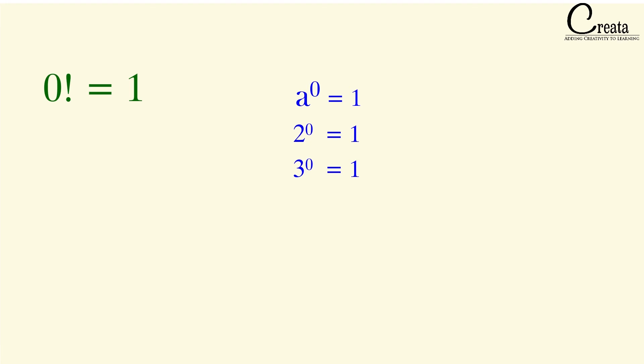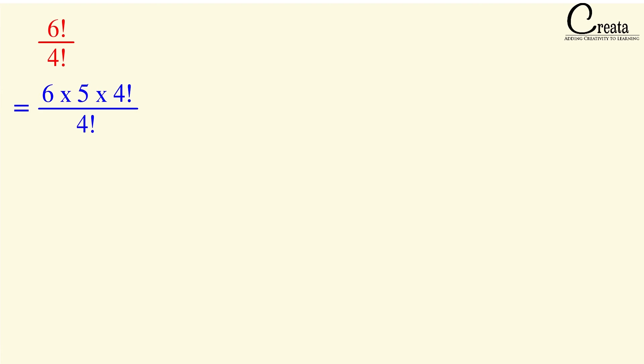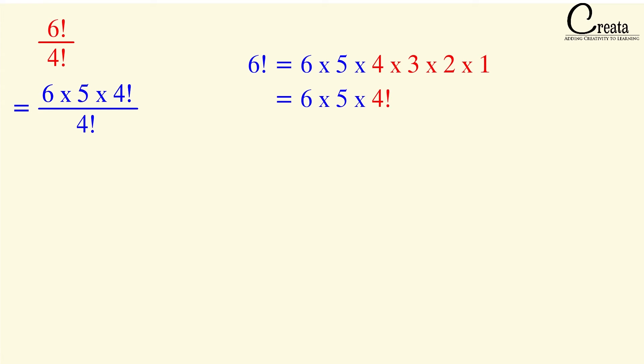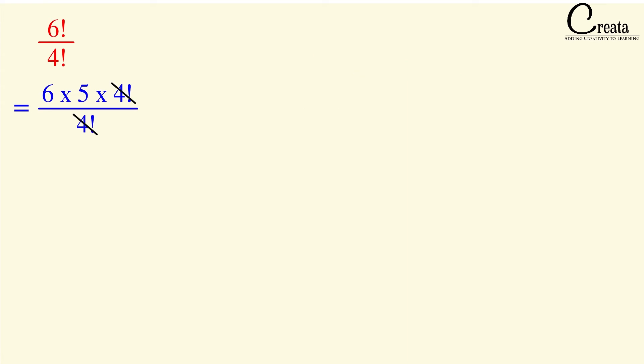So let's move further and take some questions to try to solve. The first question is 6 factorial upon 4 factorial. Can we rewrite 6 factorial as 6 into 5 into 4 factorial? 6 factorial is 6 into 5 into 4 into 3 into 2 into 1, and 4 into 3 into 2 into 1 is basically 4 factorial. So 4 factorial and 4 factorial cancel out, and we get the answer as 6 into 5, that is 30.